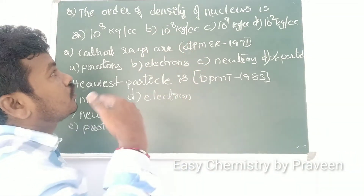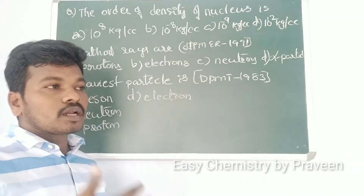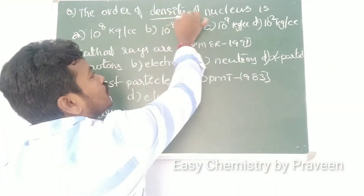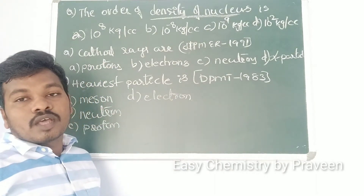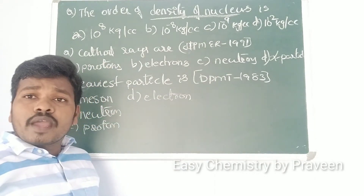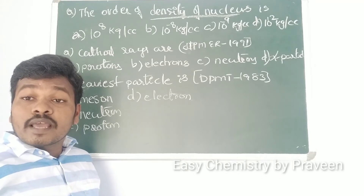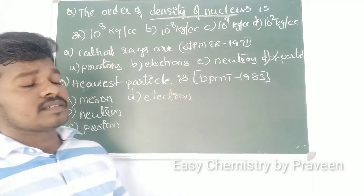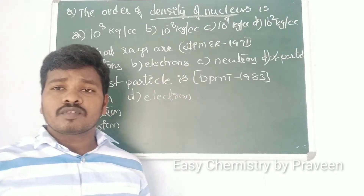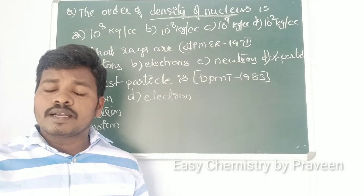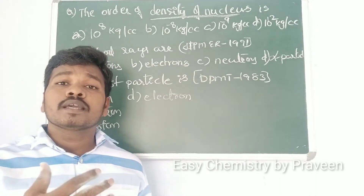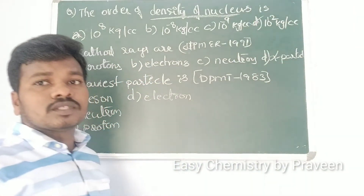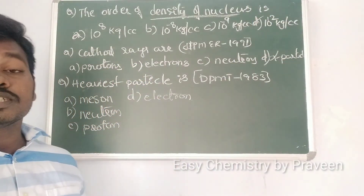The next question: the order of density of the nucleus — options: 10^8 kg/cc, 10^-8 kg/cc, 10^-9 kg/cc, or 10^12 kg/cc. The density order of the nucleus is 10^12 kg/cc, so the answer is the last option.